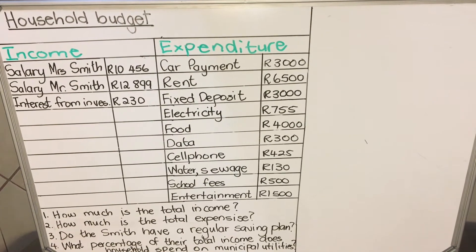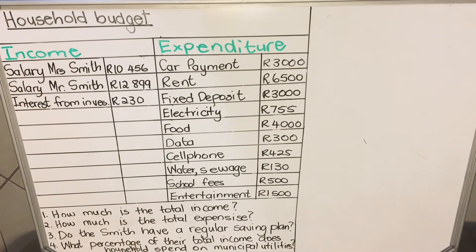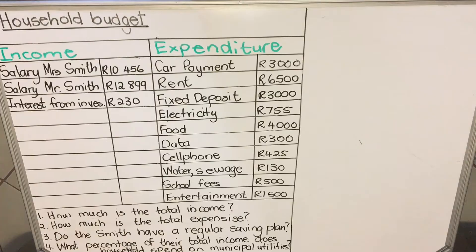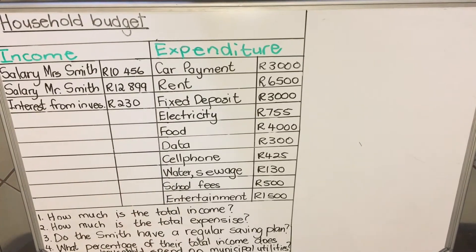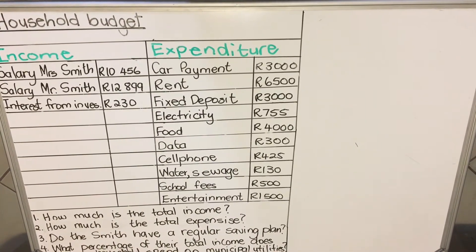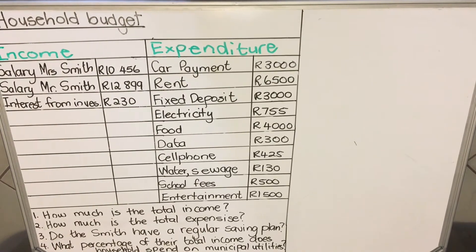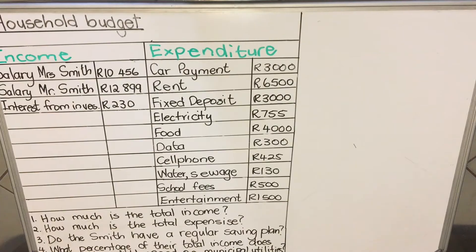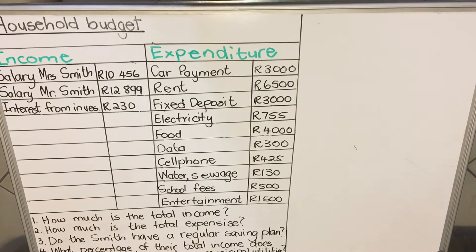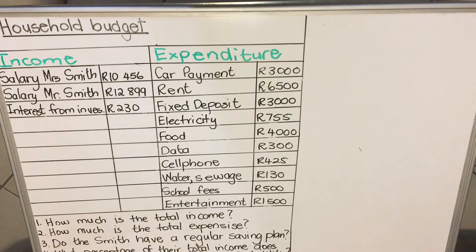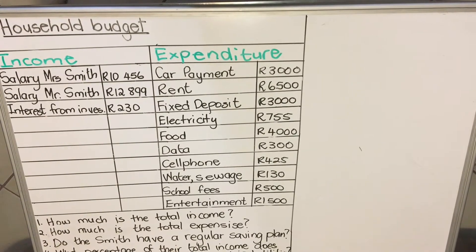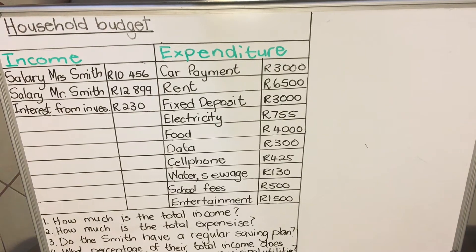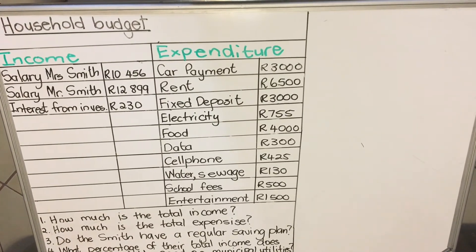Hello everyone, this is a lesson on budget, specifically household budget. This is a lesson on the Smith family. This side is their income and here is their expenditure. A budget is used to calculate how much you earn and how much you can spend. You can have a budget for anything — maybe you want to take a trip, or you need to save a certain amount.